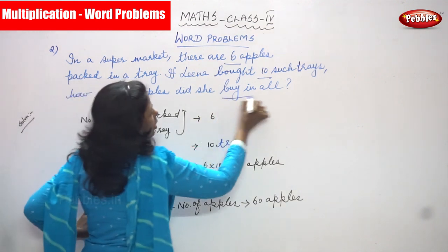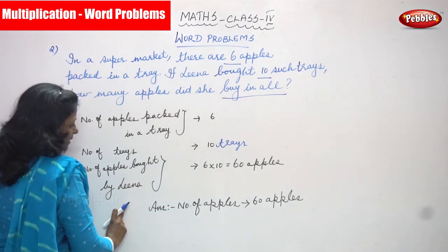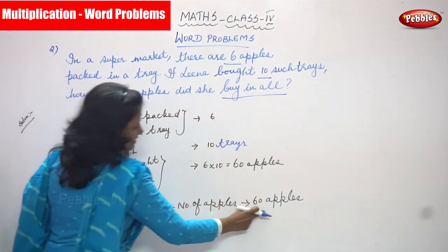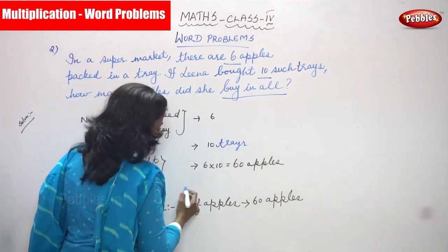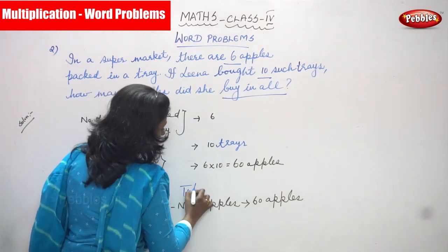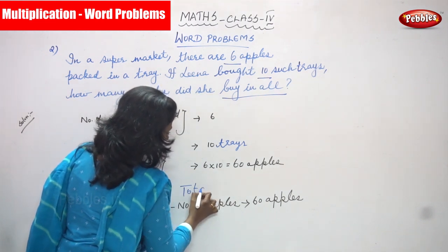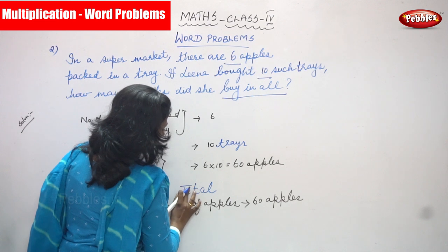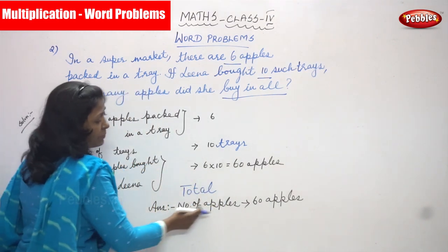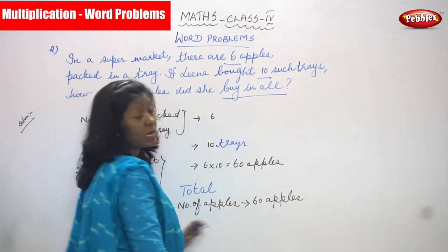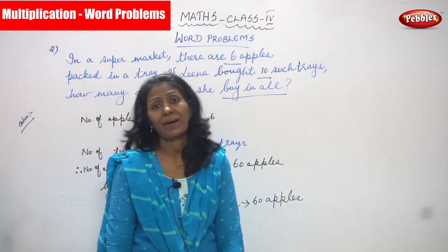That is the total number of apples bought by Lena. "Bought in all" means the total number of apples. The answer is sixty apples — sixty apples are bought by Lena.